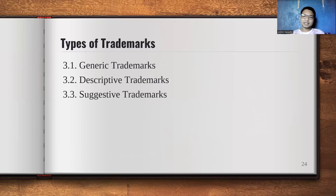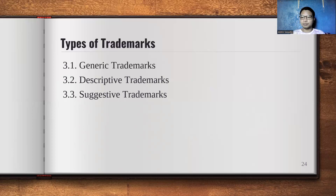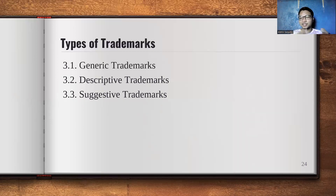For suggestive trademarks, it describes the product indirectly. For example, Jaguar is a brand of vehicles. If you relate the Jaguar animal to their product — since a Jaguar is fast and moves quickly — you can see the indirect relationship between the animal and the vehicle product. That's a suggestive trademark — it indirectly describes the product.